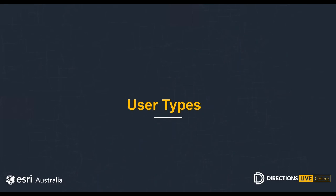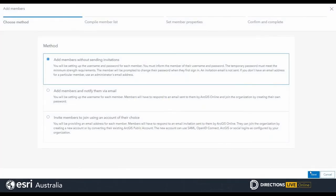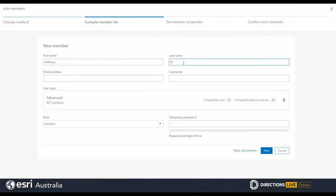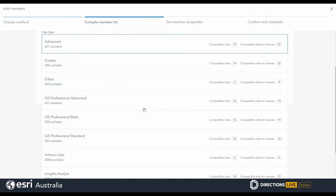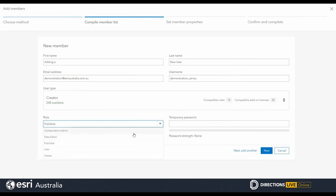Let's jump into user types a bit more. Organizations use, create and share a wide range of geographic content including maps, scenes, apps and layers in different ways. The ability of individual organization members to access and work with content depends on the privileges they have in the organization. User types allow organizations to control the scope of privileges that can be assigned to members through roles. Organizations assign user types to members based on their needs and requirements, and the user type determines the privileges that can be granted through a default or custom role.